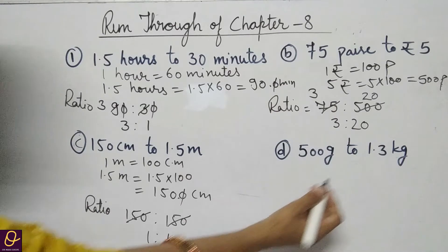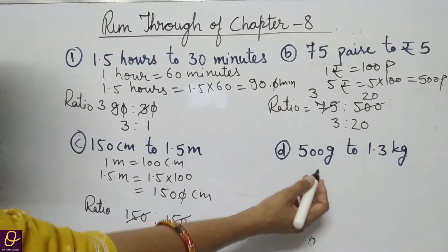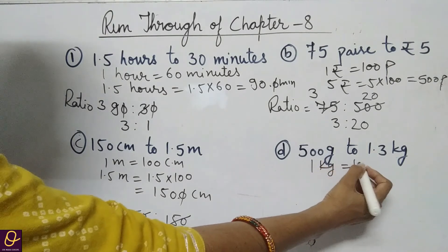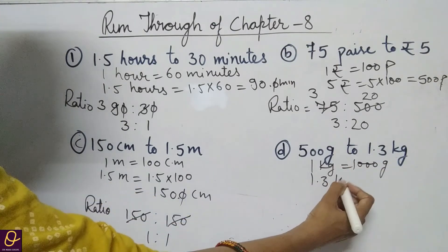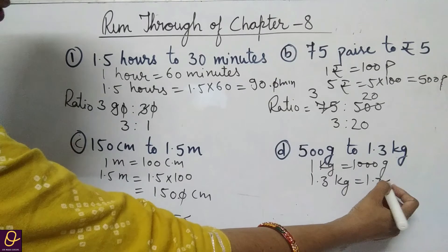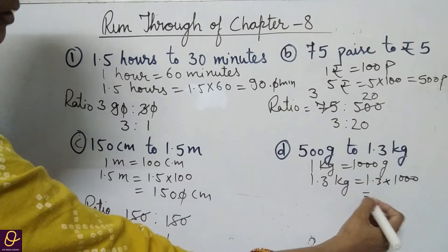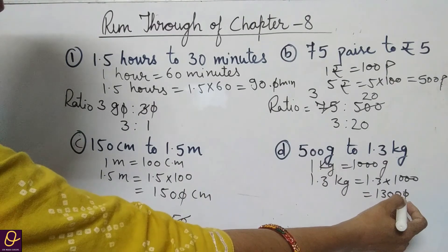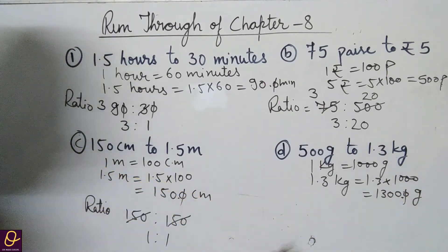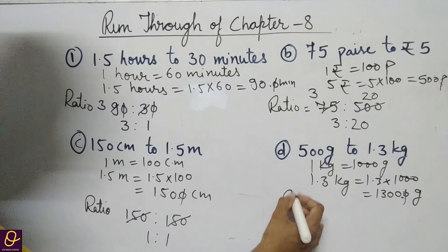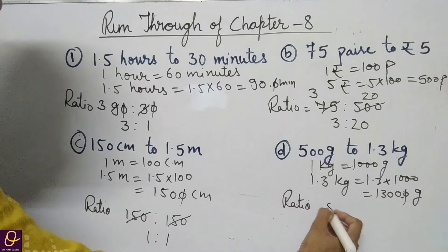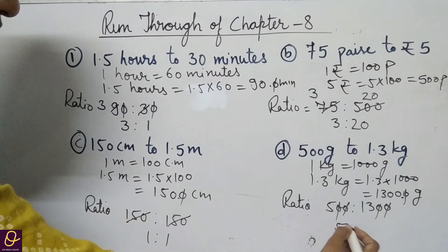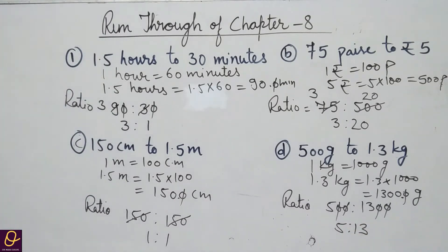Part D: the first value is given in kilograms and the second in grams, so we will change kilograms to grams. 1 kg equals 1000 grams, so 1.3 kg equals 1.3 into 1000. Moving the decimal gives 1300 grams. The ratio simplifies to 5 ratio 13, which is our answer.